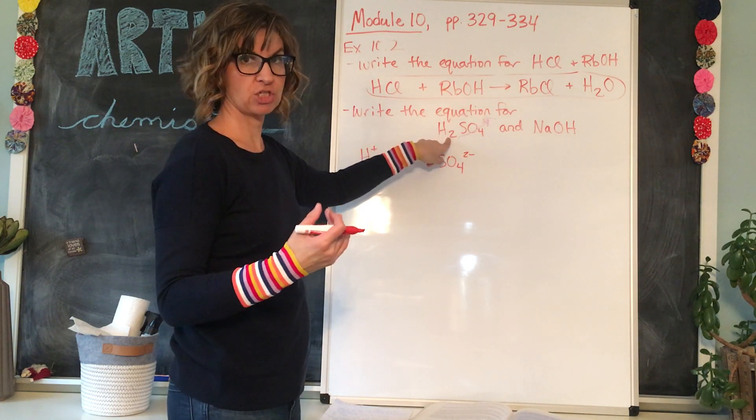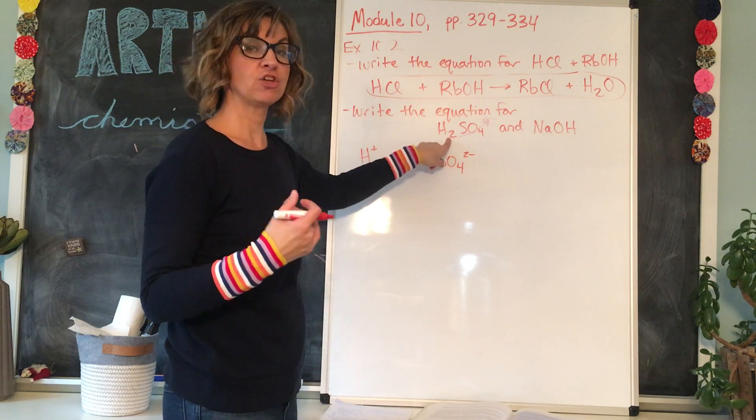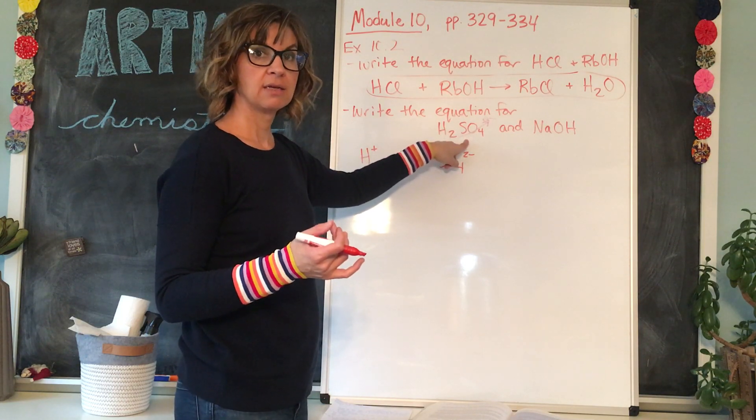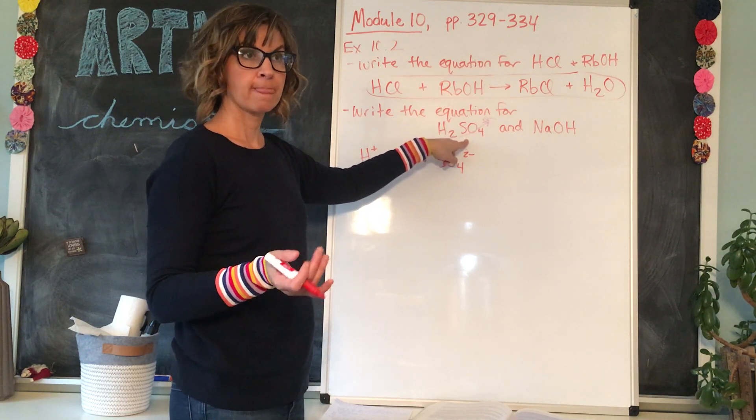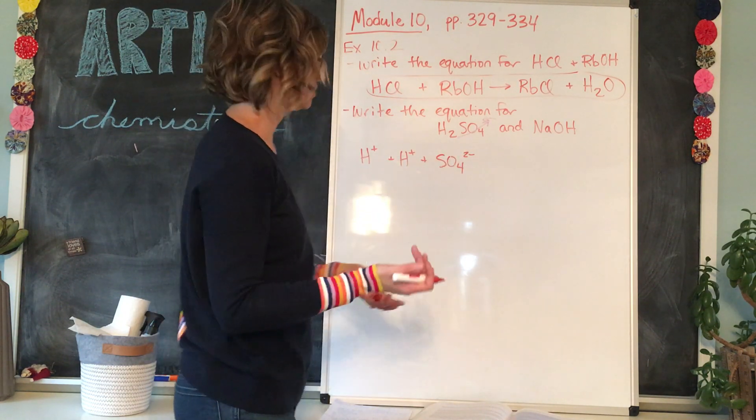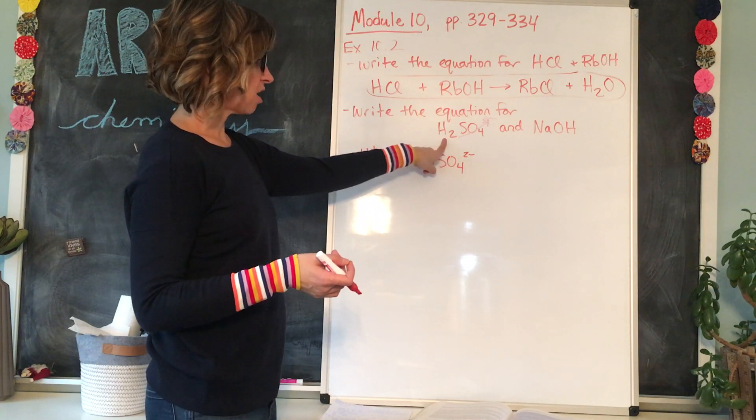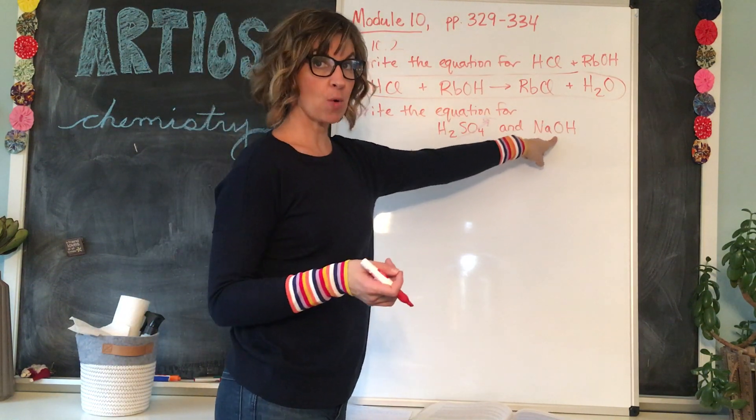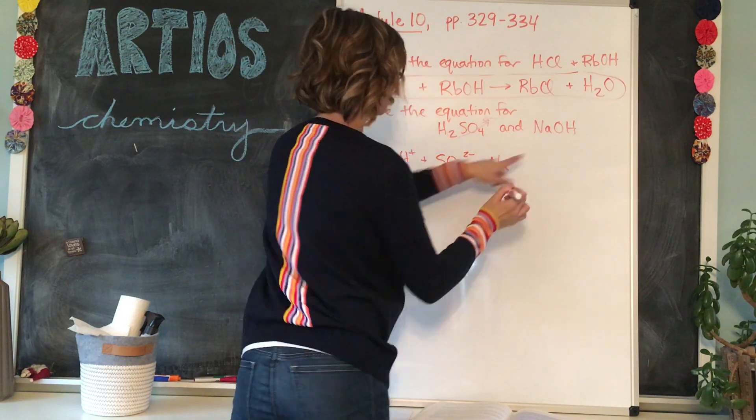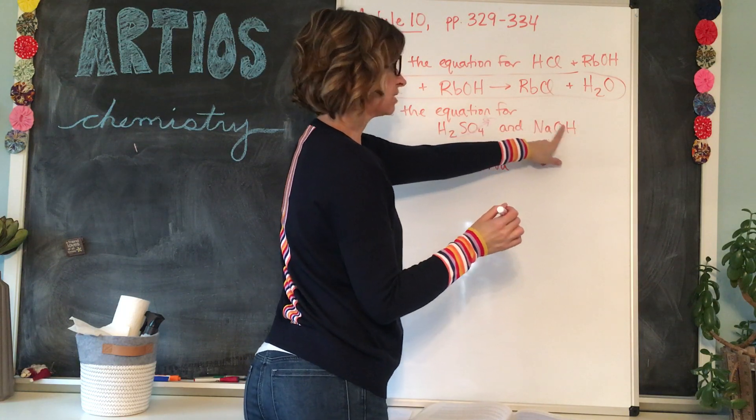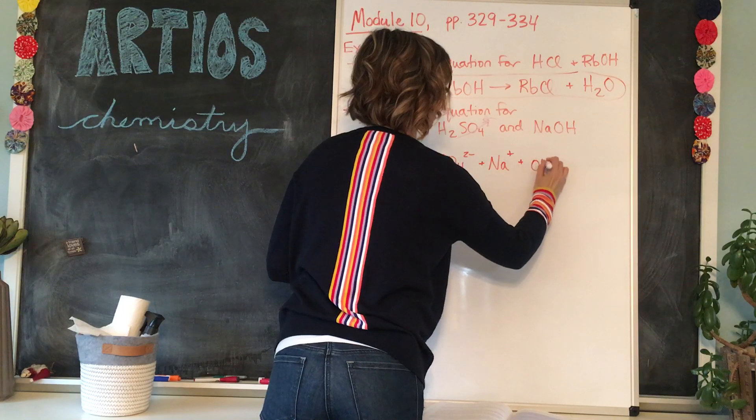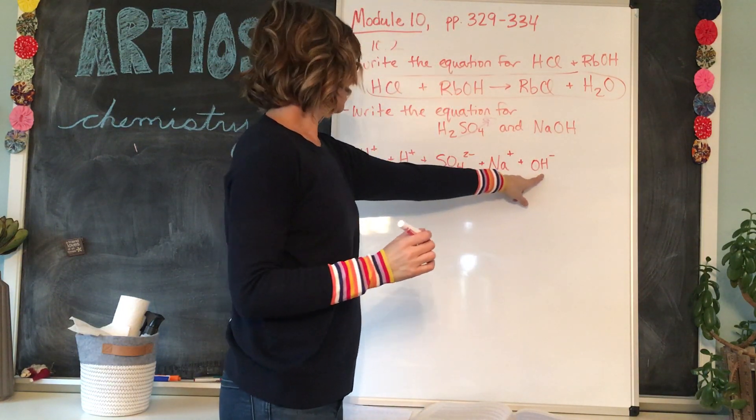And again, you can tell that it has to have a two minus charge because in order to balance this compound out, there had to be two H's. H normally has a one plus charge. Hope that makes sense. If not, you're going to have to go back and review how to form chemical formulas in ionic compounds back in module eight. Alright. So we've taken the H plus off of the acid. Next step is to take the OH off of the base. So now we've got Na. And again, Na must have a one plus charge because I know that OH has a one minus charge. So we've done that.